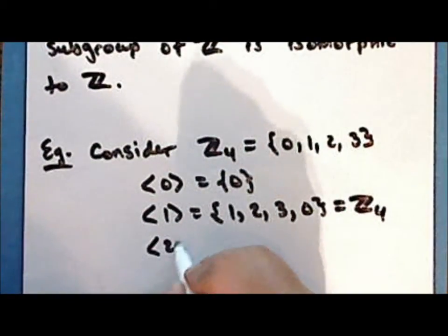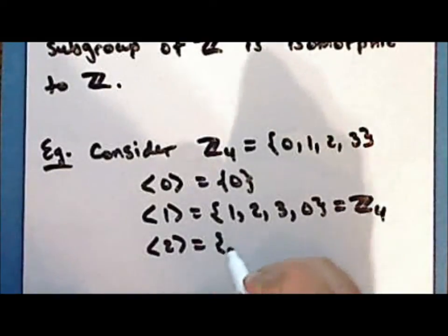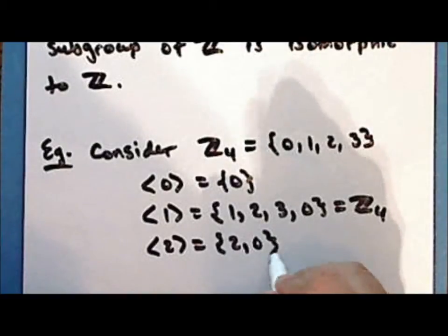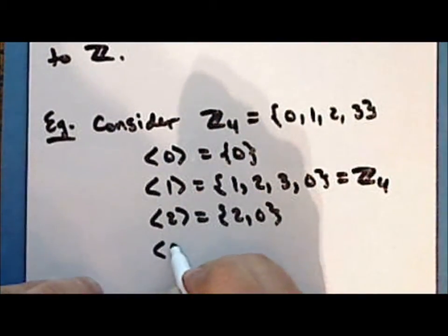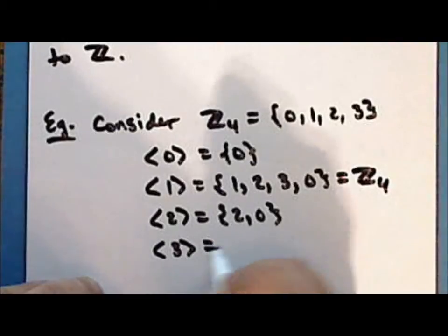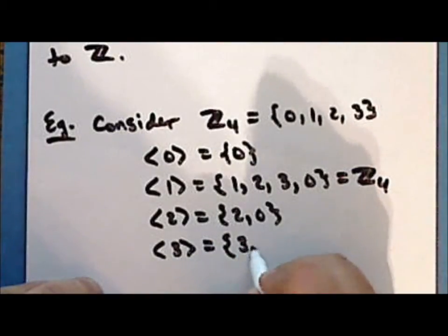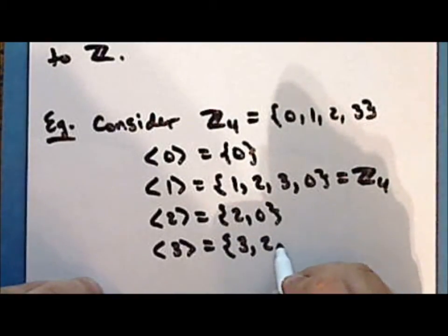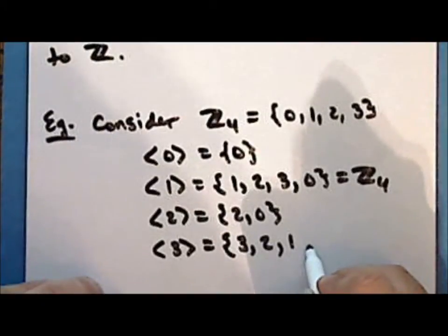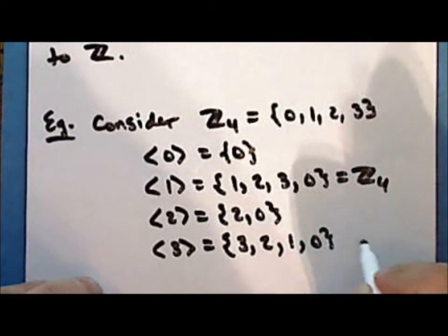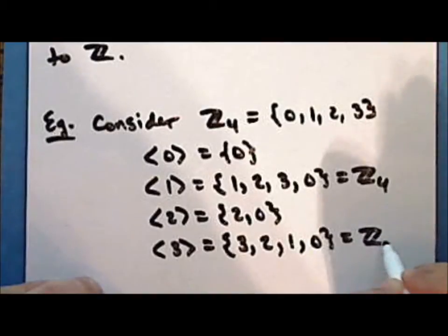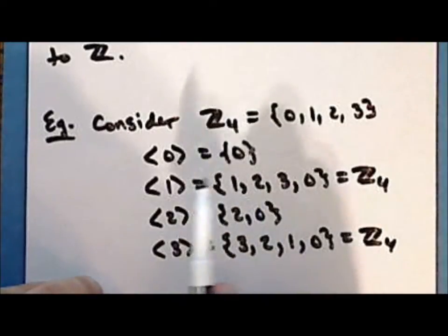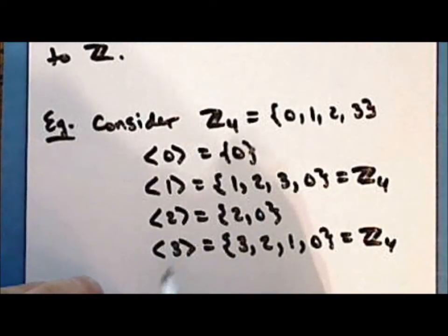If we look at the subgroup generated by 2, then this is the group which contains the element 2 and 2+2=0 modulo 4. And if we look at the subgroup generated by the element 3, then this is the group which contains 3, 3+3=2 modulo 4, 2+3=1 modulo 4, and 1+3=0 modulo 4. Notice that this is also the entire group. So the cyclic group of integers modulo 4 can be generated either by the element 1 or the element 3.